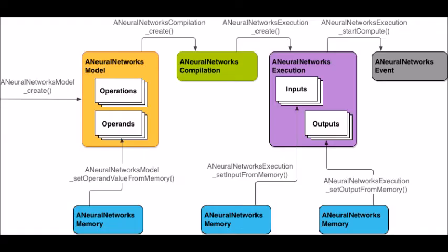Google said they designed the Neural Networks API as a foundational layer for frameworks like TensorFlow Lite, Caffe2 and others. If available, the API can make use of special AI chips on the device, or fall back to the CPU if that's the only option.